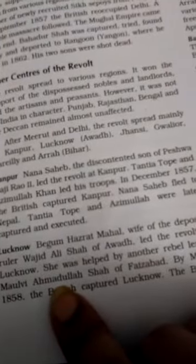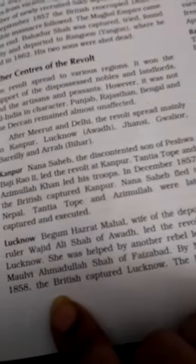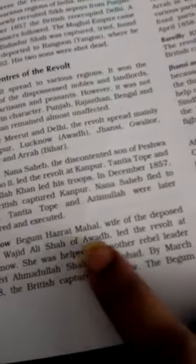At Lucknow, Begum Hazrat Mahal — wife of the deposed ruler Wajid Ali Shah of Awadh — led the revolt. She was helped by rebel leader Maulvi Ahmadullah Shah of Faizabad. By March 1858, the British captured Lucknow. The Begum escaped to Nepal.